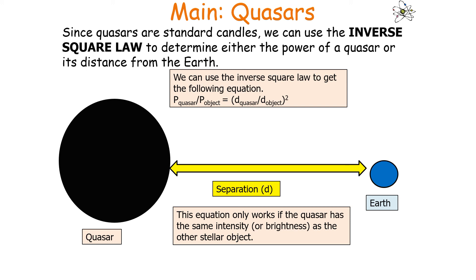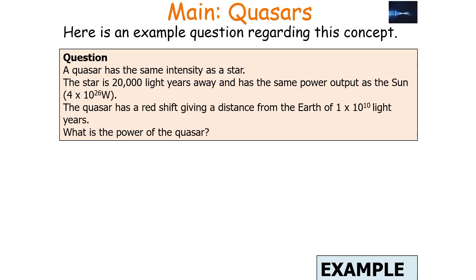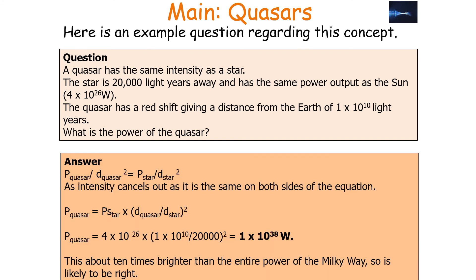Example question: A quasar has the same intensity as a star. The star is 20,000 light years away and has the same power output as the sun. The quasar has a redshift giving a distance from the Earth of 1 times 10 to the 10 light years. What is the power of the quasar? Since intensity cancels, P_quasar equals P_star times (d_quasar over d_star) squared, which equals 4 times 10 to the 26 times (1 times 10 to the 10 over 20,000) squared, giving 1 times 10 to the 38 watts — about 10 times brighter than the entire power of the Milky Way, so this answer is likely correct.